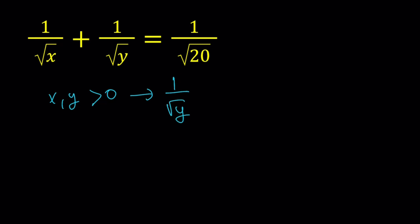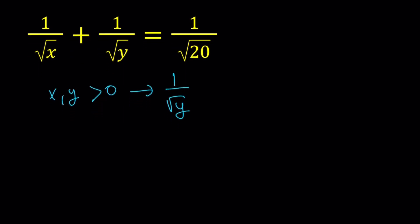Let's go ahead and isolate 1 over the square root of y from here. There are different ways to go about it. I'm going to show you a different approach as well. So 1 over the square root of y can be written as 1 over the square root of 20 minus 1 over the square root of x.